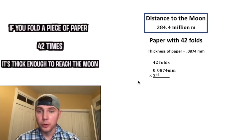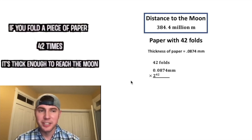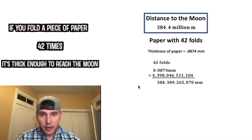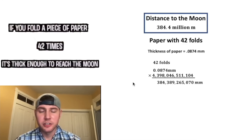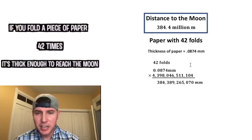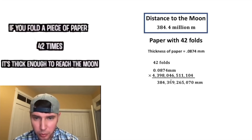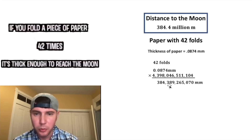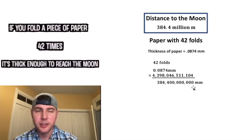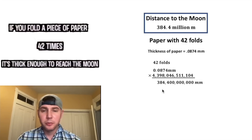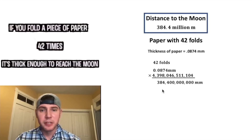Now if we had 42 folds, that'd be multiplied by 2 to the 42nd power — it's this very large number right here. After we multiply these, we get this other very large number. This multiplication has introduced extra precision that does not exist, so I'm going to cut it at 4 figures, so this 3 will round up to a 4, and the rest is just zeros. So now we have 384,400,000,000 millimeters.